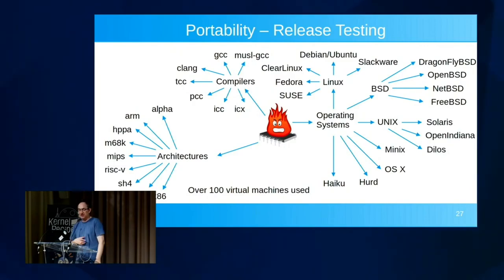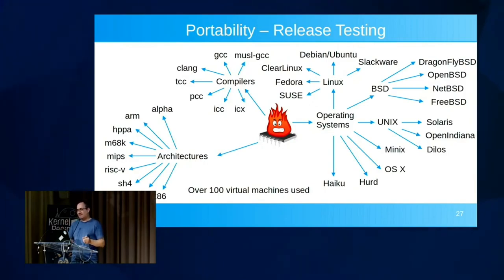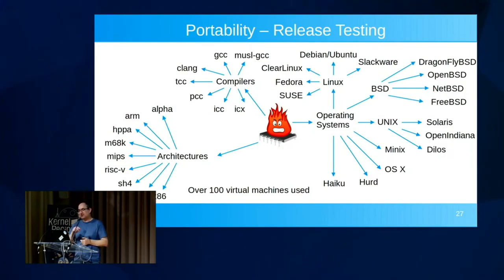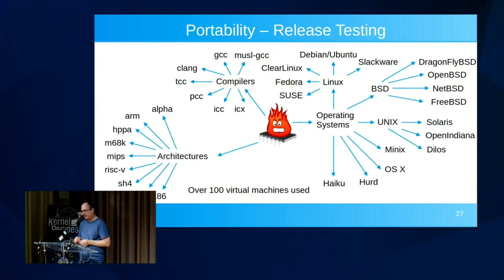Being a Debian person, I have lots of VMs emulating different processor architectures, and before each release I make sure StressNG not only compiles but passes regression tests on all of them. A release takes me about two and a half days across 100 virtual machines. I also push StressNG through static analyzers: Coverity Scan, Clang scan-build, and CPP-check. I try to make it as good as I can, but I'm human and make mistakes.